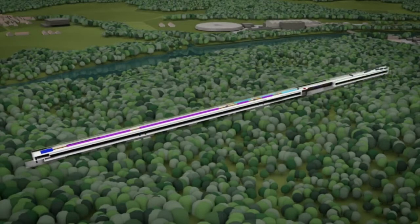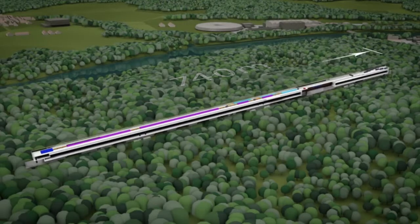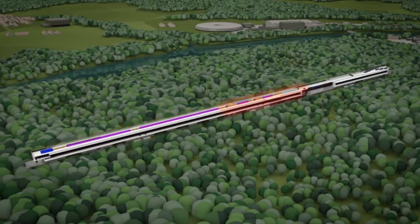SwissFEL will be 740 meters in length. The facility is composed of four parts: an injector with an electron source, a linear accelerator, a series of undulators, and the experimental facilities.